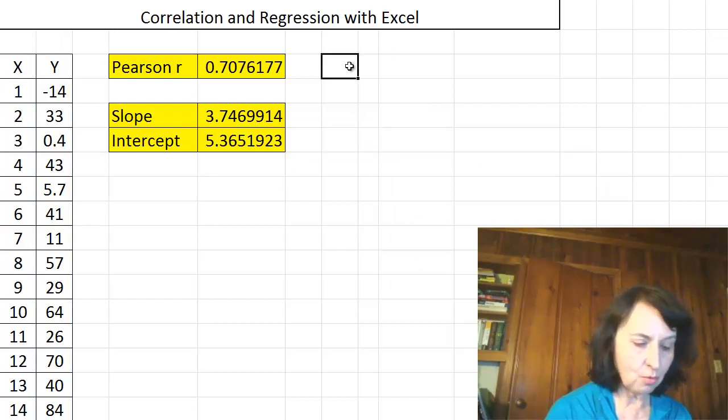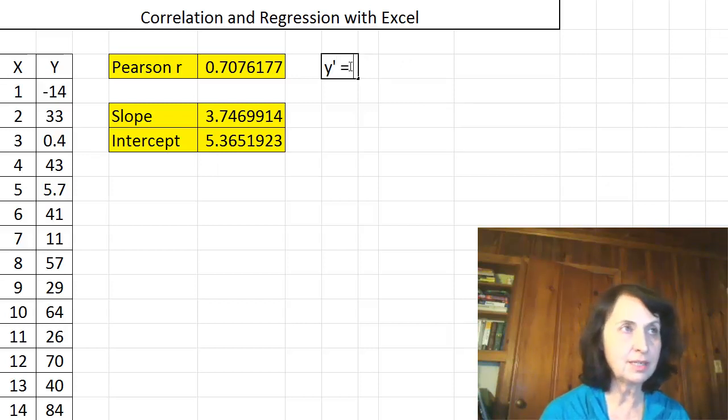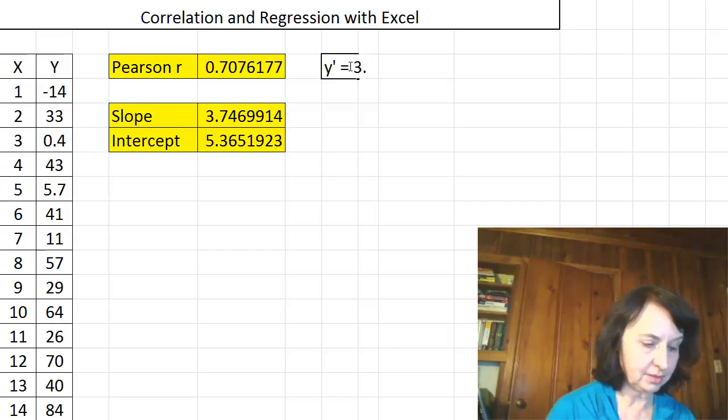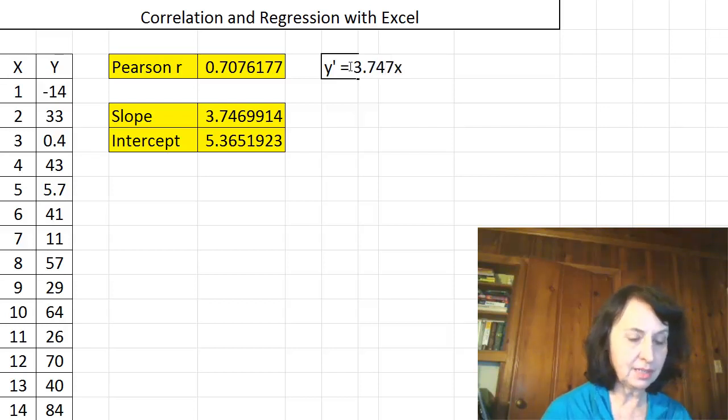Now, Y prime, the formula, the regression formula that is the best fit for this data set, would be 3.747, of course I will round a little bit, times X plus the intercept, 5.365.